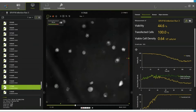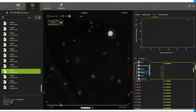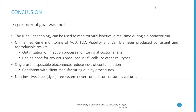Results can still be generated at the single cell level, and everything can still be exported. The conclusion was that the experimental goal was met: the I-Line F technology can be used to monitor viral kinetics in real time during a bioreactor run.